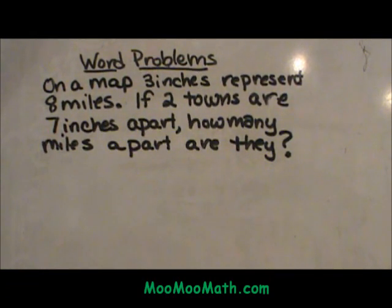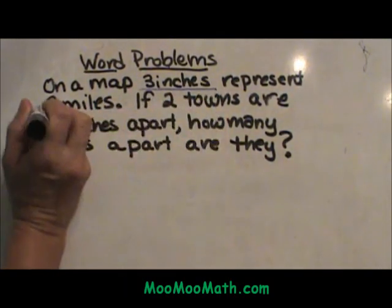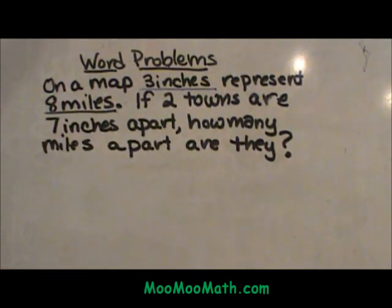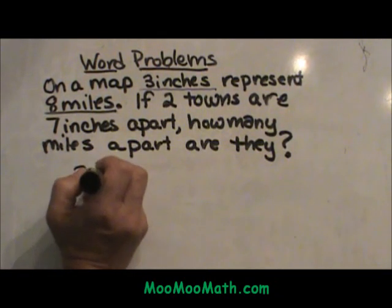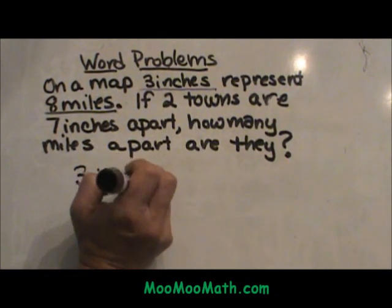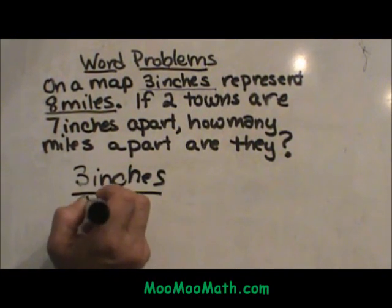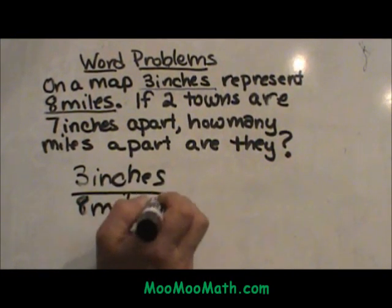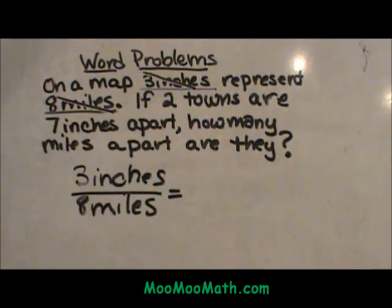On a map, three inches represent eight miles. So those two actually go together — I am going to underline those. Three inches and eight miles. Notice the units are different. So I am going to set up three inches on top and the scenario matches the eight miles on the bottom. Now we are finished with those two pieces of information.